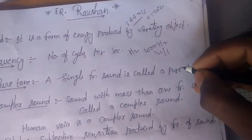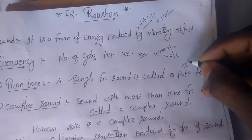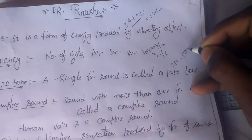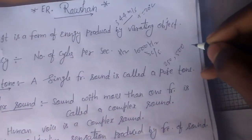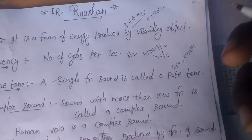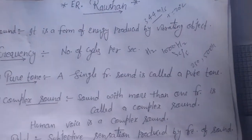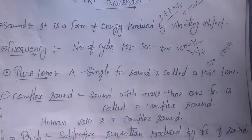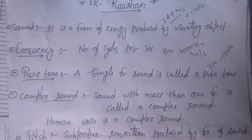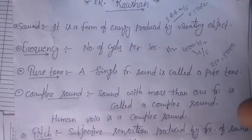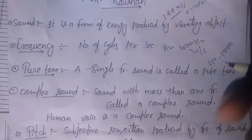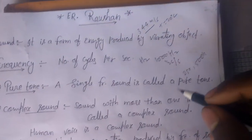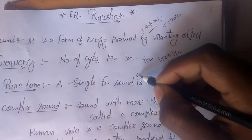In pure tone audiometry, we measure the threshold of hearing in decibels for various pure tones from 125 to 8000 Hertz.